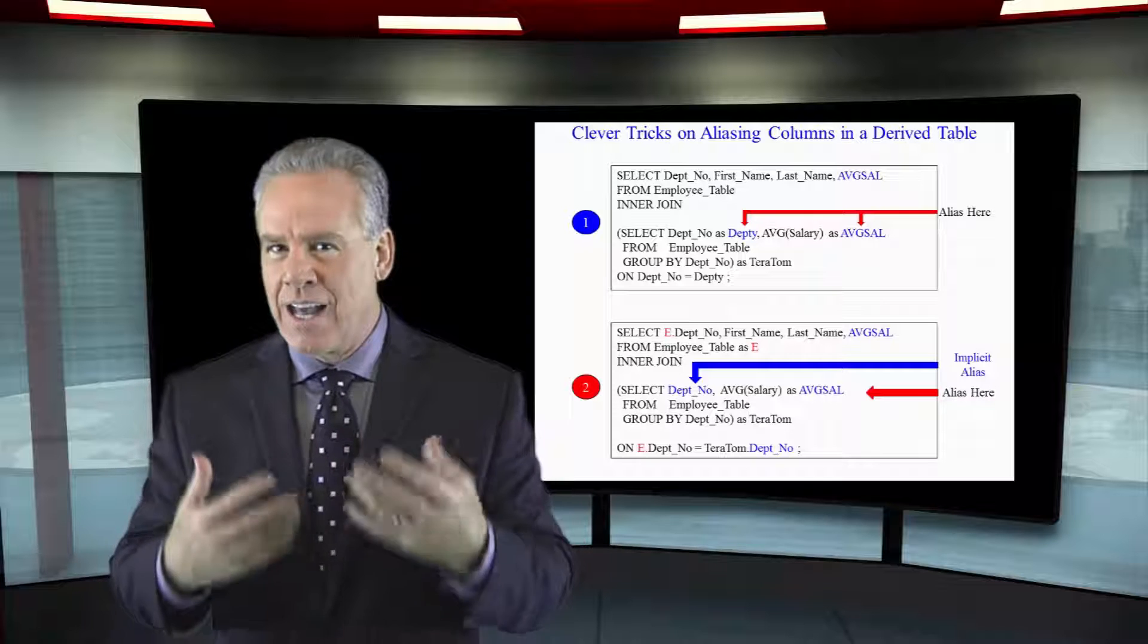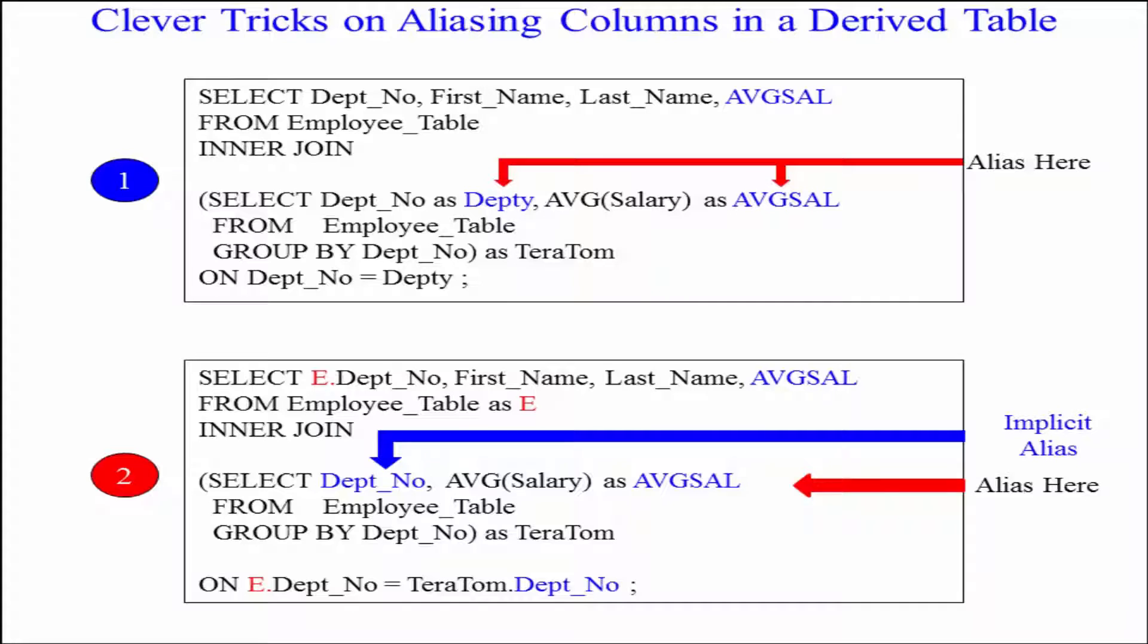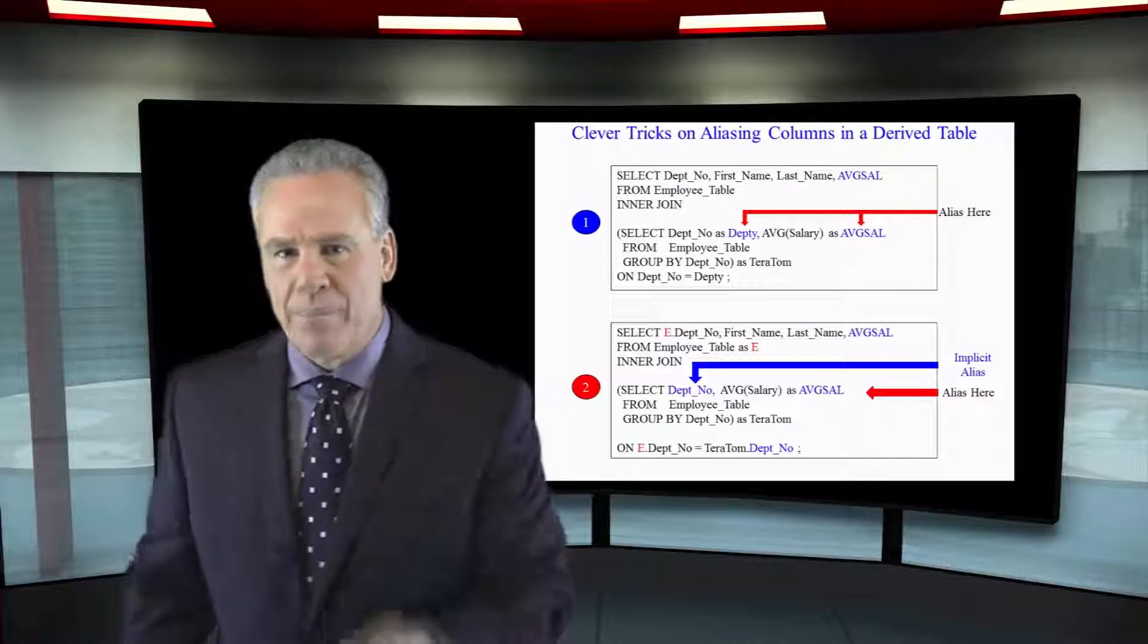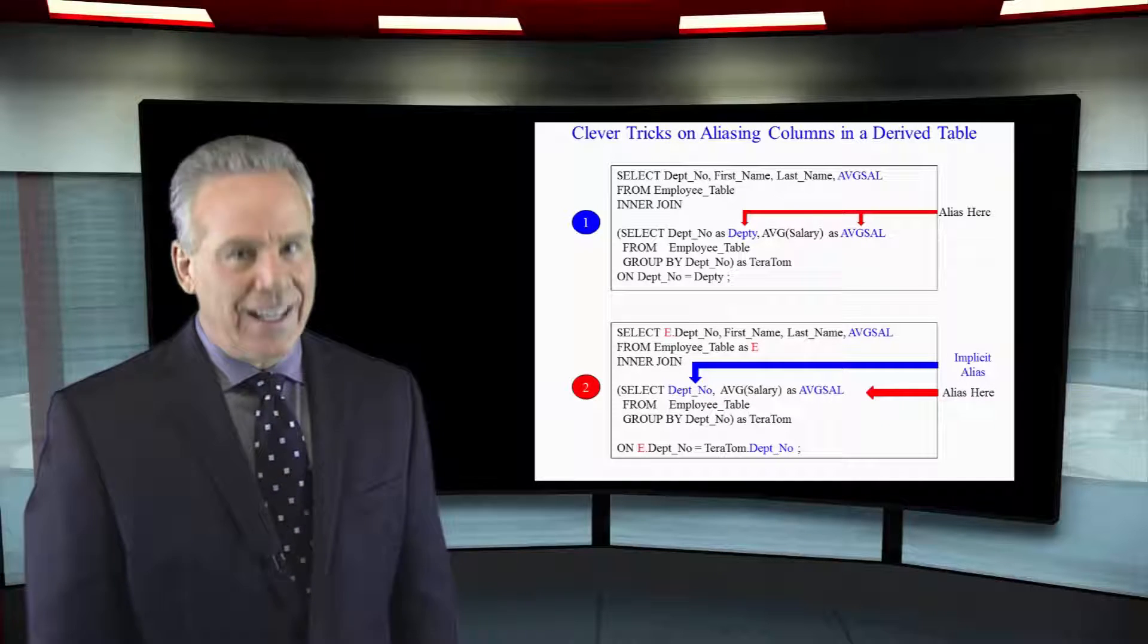You've got to alias the columns, but you've got a little flexibility there, and I want to really emphasize this point here. Notice my two queries. We say select Depno as Deptee and average salary as AVG Sal. I have specifically named both of those columns right there in that select clause. In the example below, I have said select Depno comma average salary as AVG Sal. In that case, I let Depno just alias itself by its current name, and I was able to fully name the average salary because it's an aggregate that's a rule. So there's some flexibility in aliasing those columns.